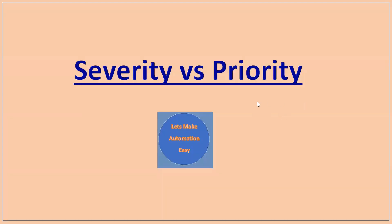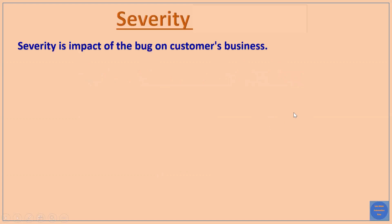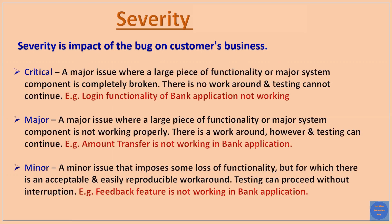Welcome all. Today I'm going to discuss severity and priority in testing. Severity is the impact of a bug on the customer's business — it tells us what the impact of a bug will be. There are three types of severity: critical, major, and minor, which we will cover one by one.